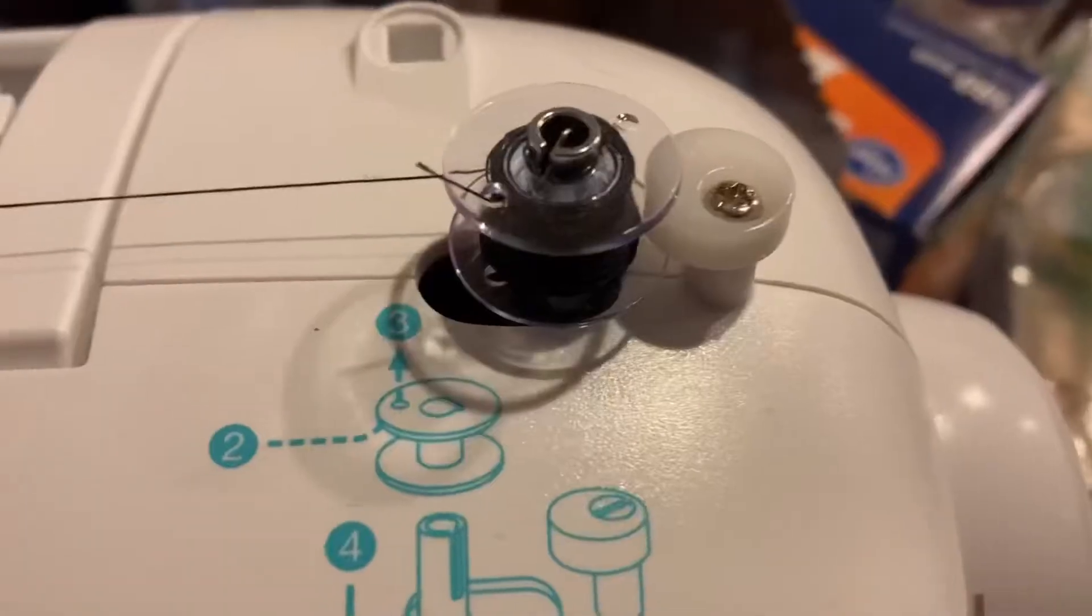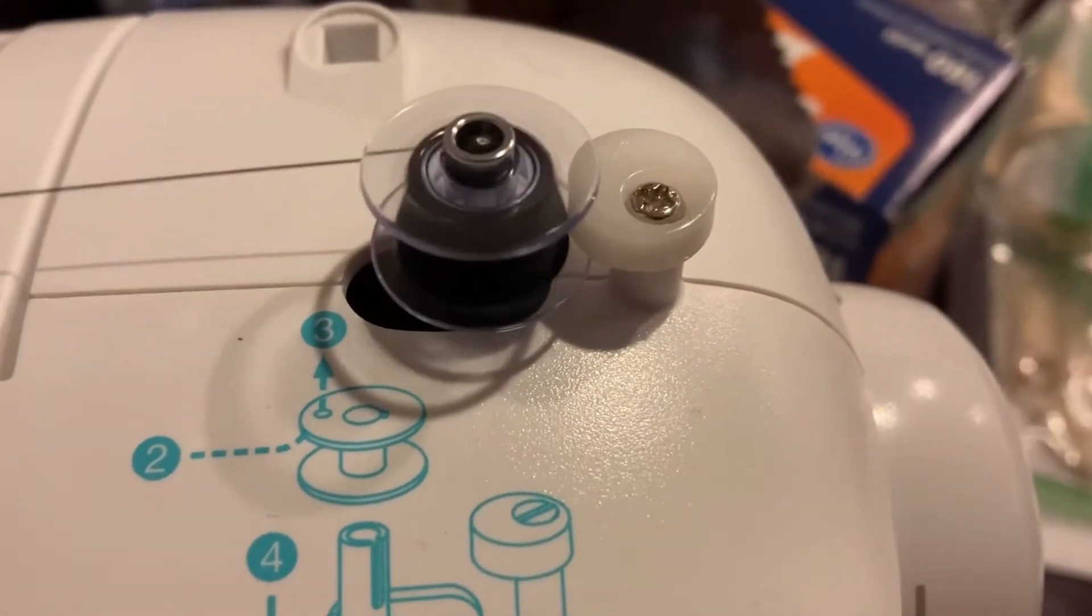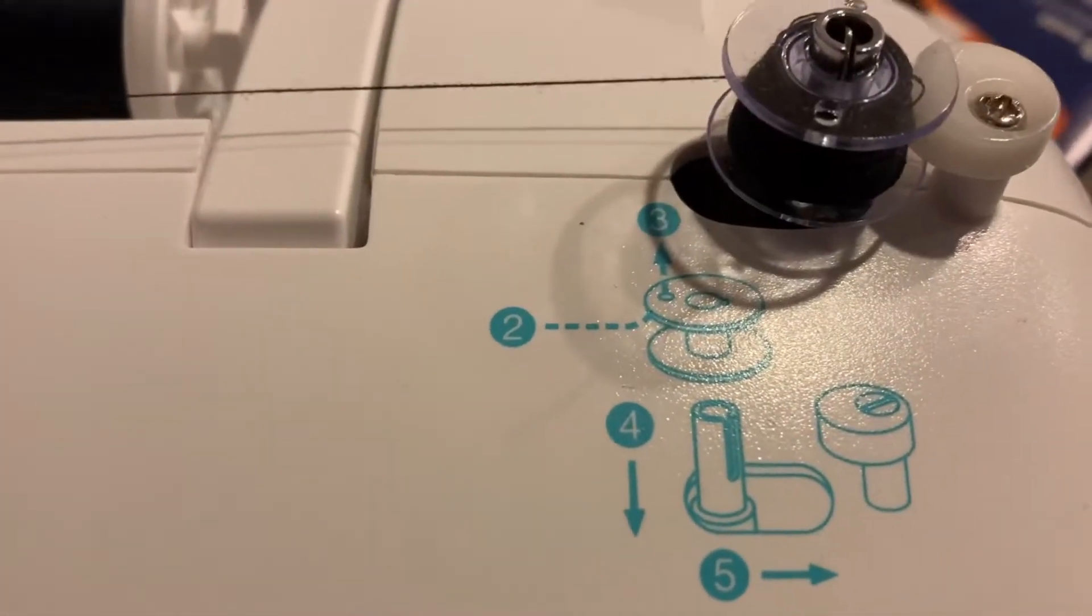Next step is to wind the bobbin and prepare your machine for sewing. With this I just use black thread because it is a black corset and just a normal needle.